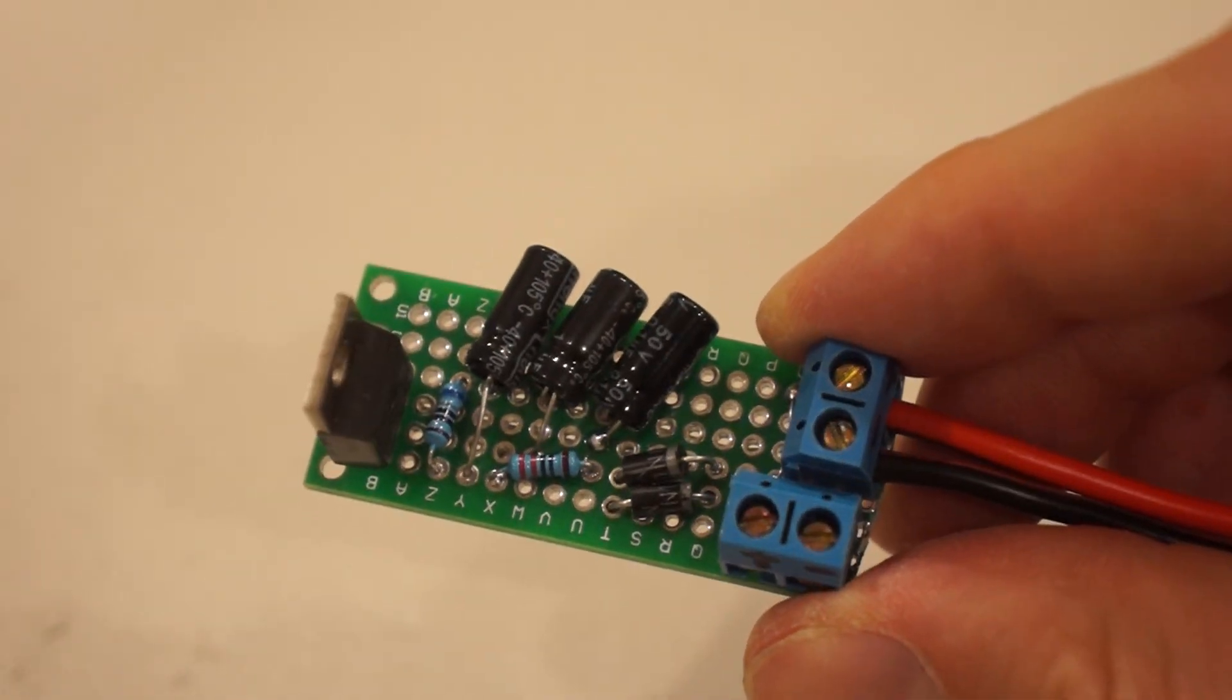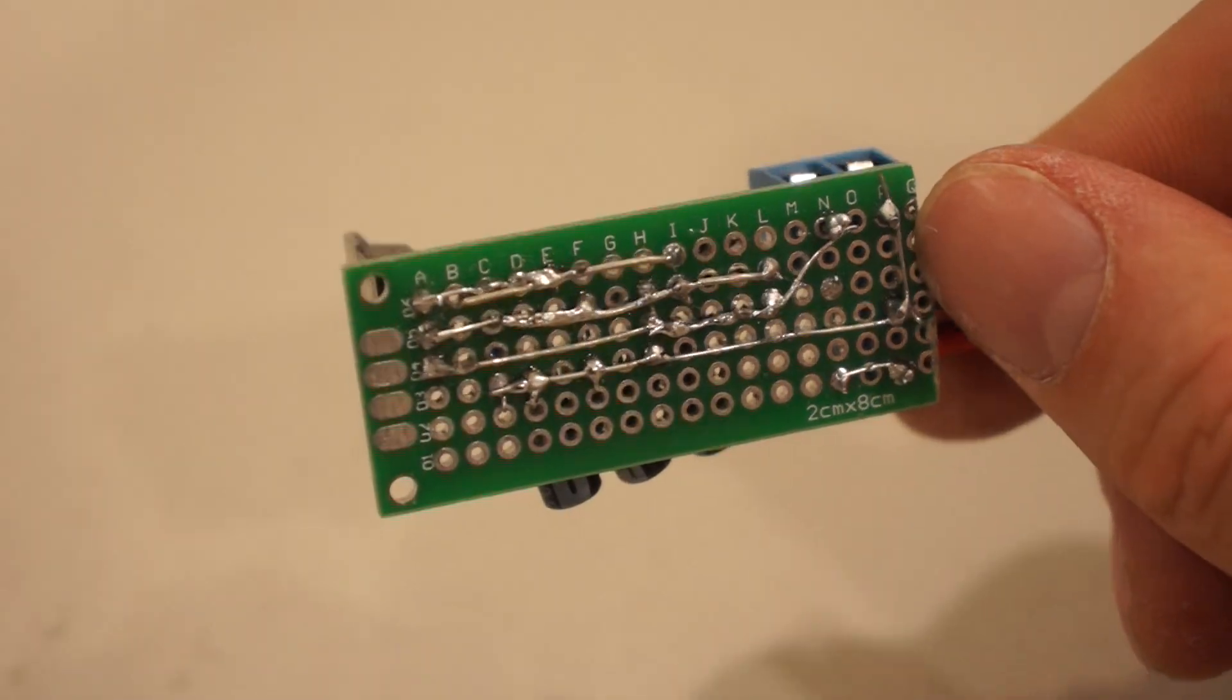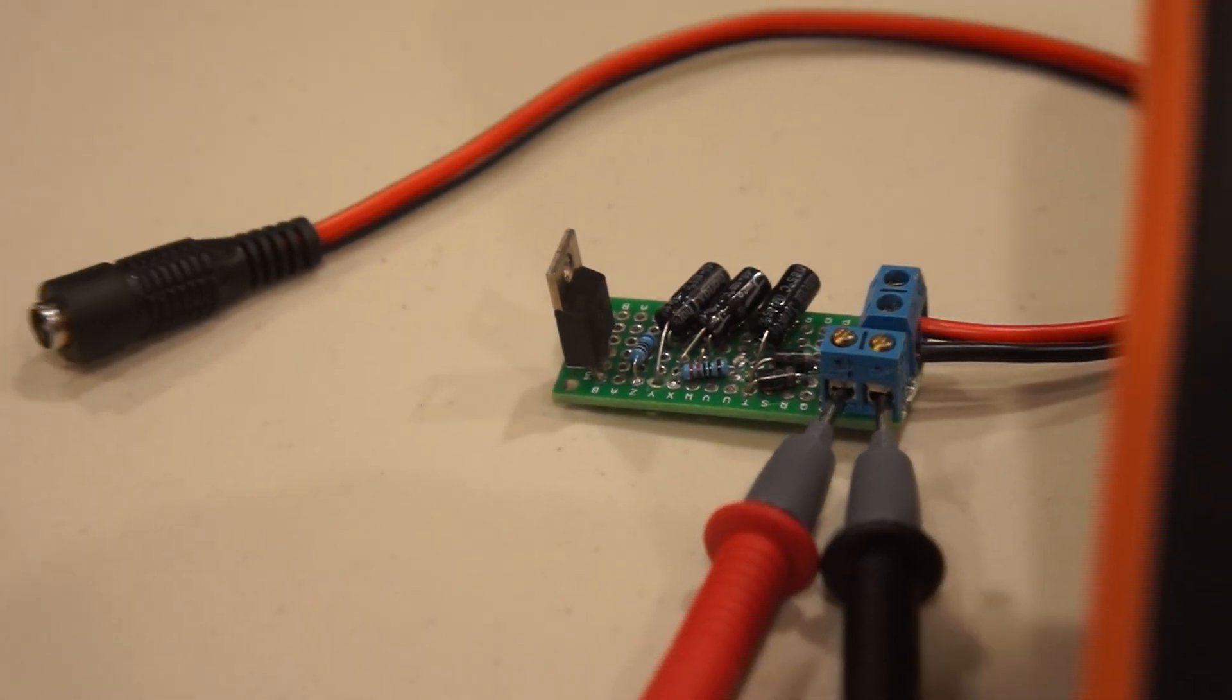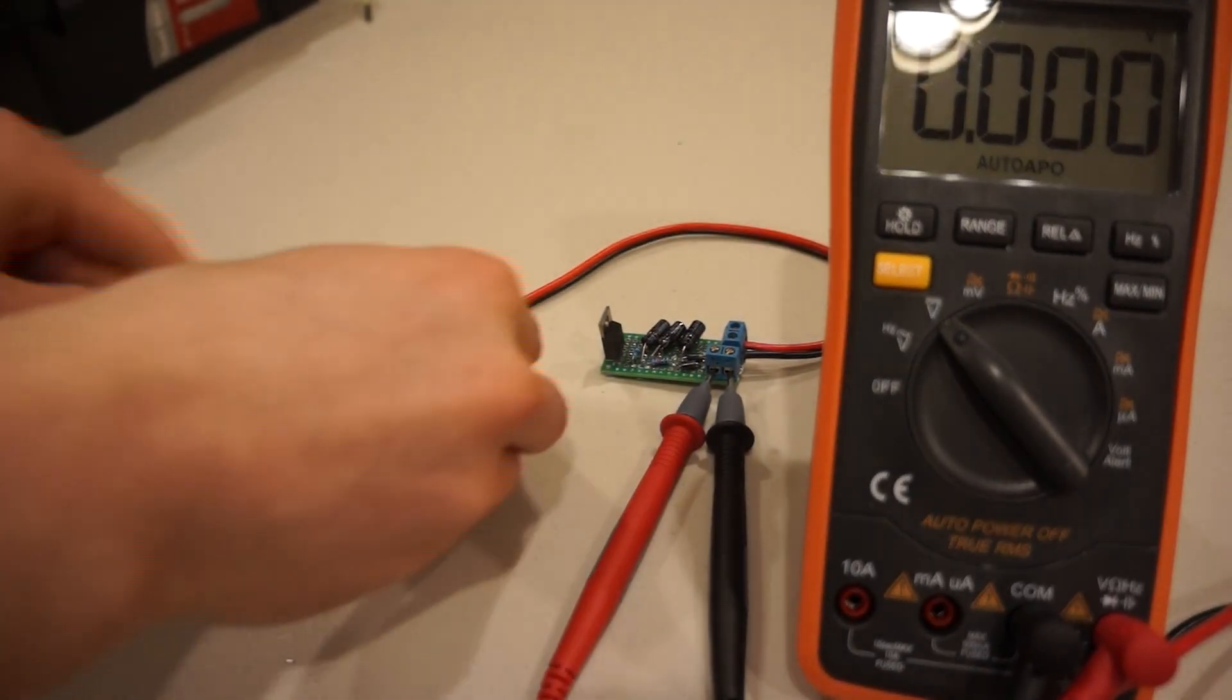We'll have two terminal blocks, one for the input voltage for the motor, and one for the output voltage to the phone. We'll test again with a 9 volt input, and we see we get a smooth 5 volt output.